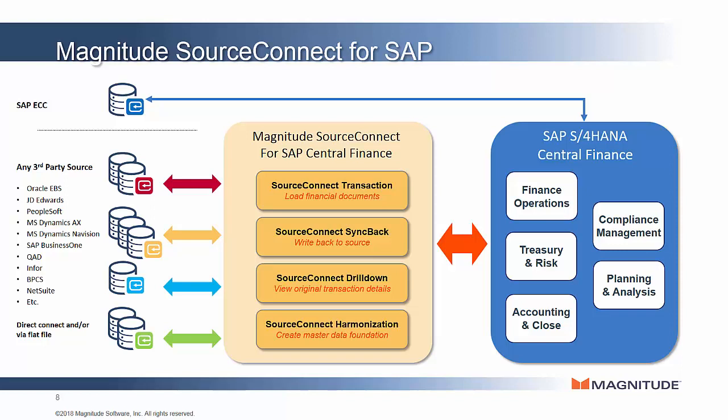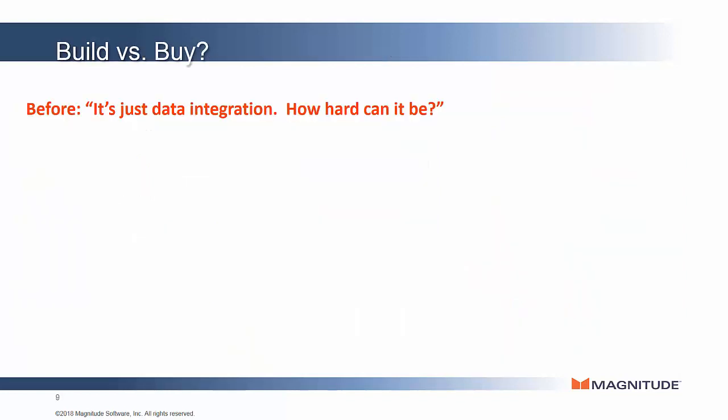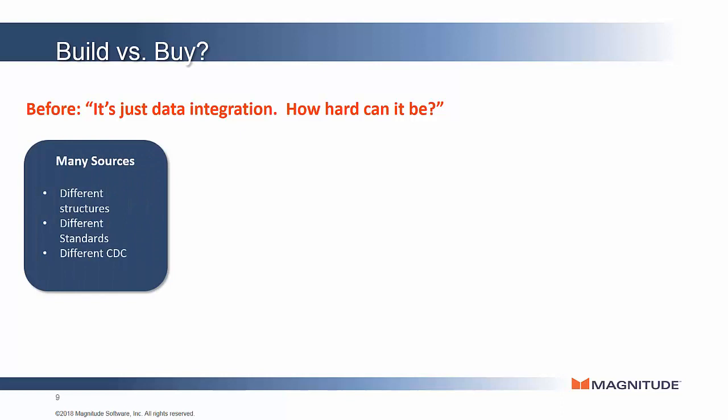Taken together, these four modules make up Magnitude SourceConnect and provide a complete solution for integrating third-party data sources into central finance. Now, most companies have done data integration projects before and may think it's just data integration — how hard can it be? Well, it can be hard. Recall that most companies have more than one source system type or platform, meaning Oracle EBS, JD Edwards, Microsoft Dynamics, and so on.